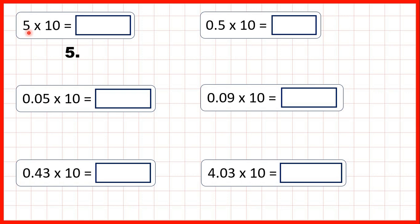First we write the number out. Remember there's really an invisible decimal point on the end of every whole number, so we can write 5 and then a decimal point. What we do is copy down the decimal point. Since we're multiplying by a number larger than 1, the number gets bigger, so digits are moving to the left. We're multiplying by 10, which has 1 zero, so digits move 1 square to the left. If we copy this 5 down 1 square to the left, the place value column before the decimal point is the ones column, and we can't have an empty ones column, so we need to write a zero. So now we have 50 and a decimal point at the end — a whole number. 5 times 10 is 50.